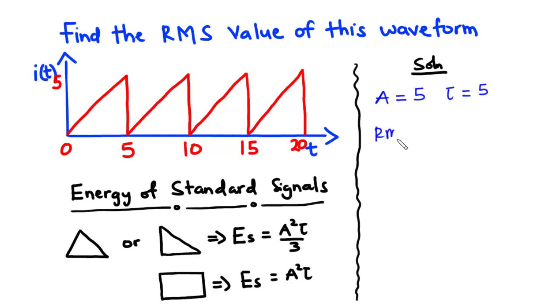So the RMS value of the signal is equal to the square root of the energy of the signal divided by the period of the signal. Since we have a half triangle, we choose the formula ES equals A squared times tau over 3.